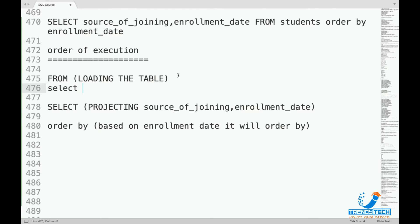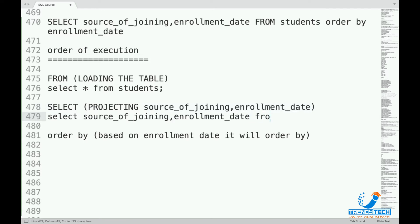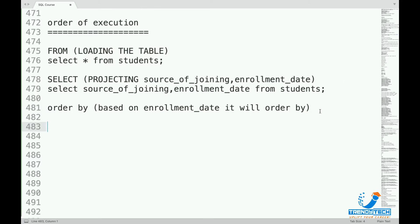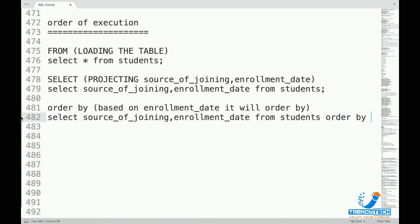Basically, when we load the table it's like SELECT * FROM students and we have all columns. When we do a projection we get limited columns only — we discard all other columns and say we just want these two. In step two the data is still unordered, that's why in the third step it will be ordered based on enrollment_date. So the order is: FROM → SELECT → ORDER BY enrollment_date.